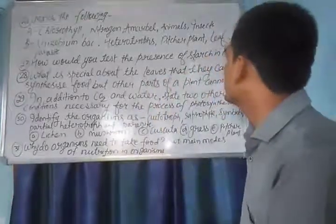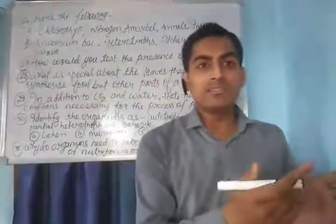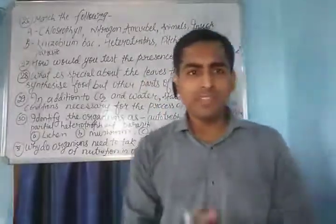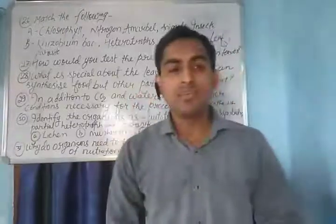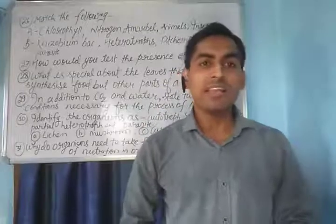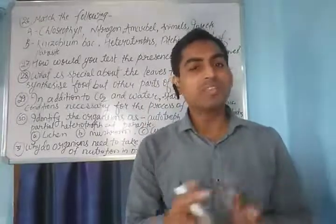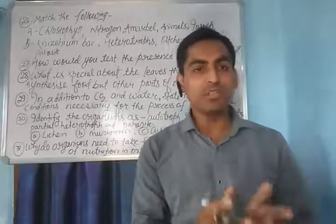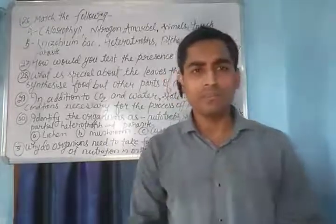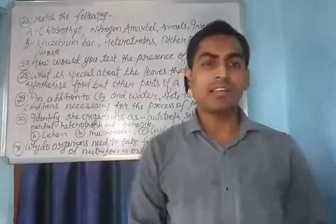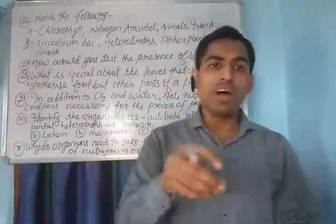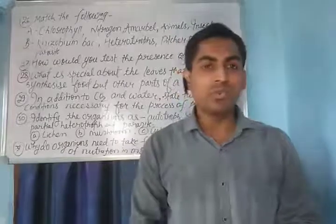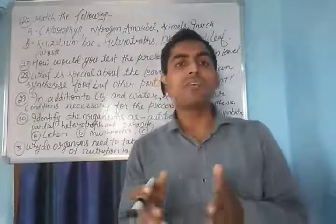Question number 27: How would you test the presence of starch in leaves? First pluck a green leaf, then boil it to make it soft. After that, with the help of alcohol, bleach it — that is the process of removing chlorophyll or green color, so the leaf becomes colorless. After that, pour a few drops of iodine solution on the leaf. The color will change to blue-black, which represents the presence of starch in leaves.